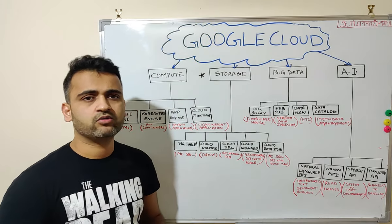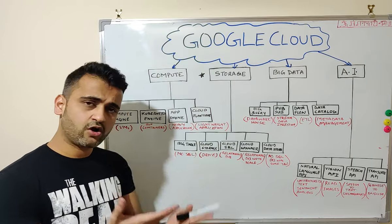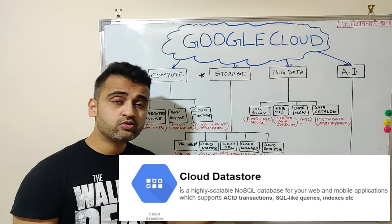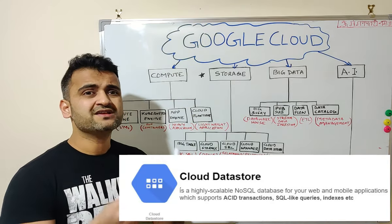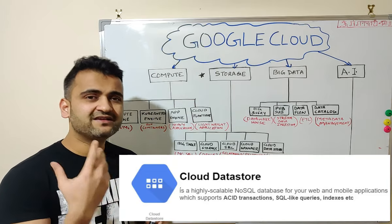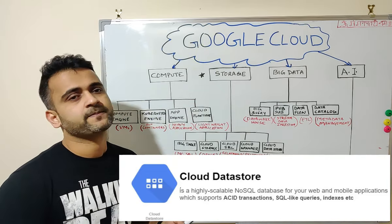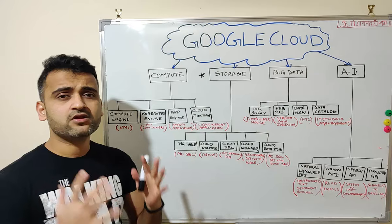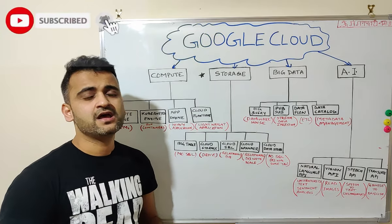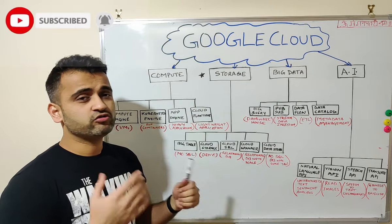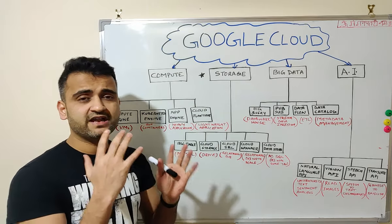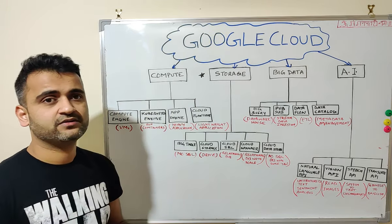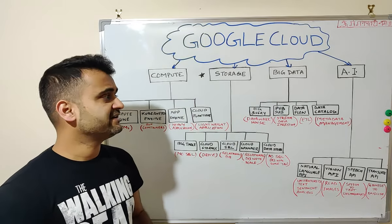Cloud Datastore can be considered a subset of BigTable. It sits on top of BigTable technology but with slight SQL support. Although it is a NoSQL database, it gives you some flexibility to use SQL queries for analysis — that is the major difference between BigTable and Cloud Datastore. We are not going into very deep details of these products here; in future videos we'll target every product one by one with use cases.